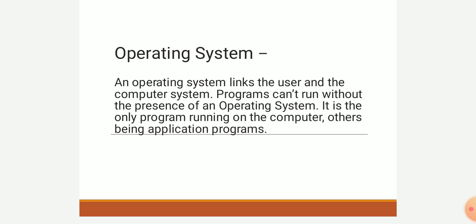An operating system works as an interface between the computer and the user. Because we are humans and the computer is a machine, there is a need to provide an interaction between the user and the computer hardware. The operating system provides an interface between two things: computer hardware and the user.